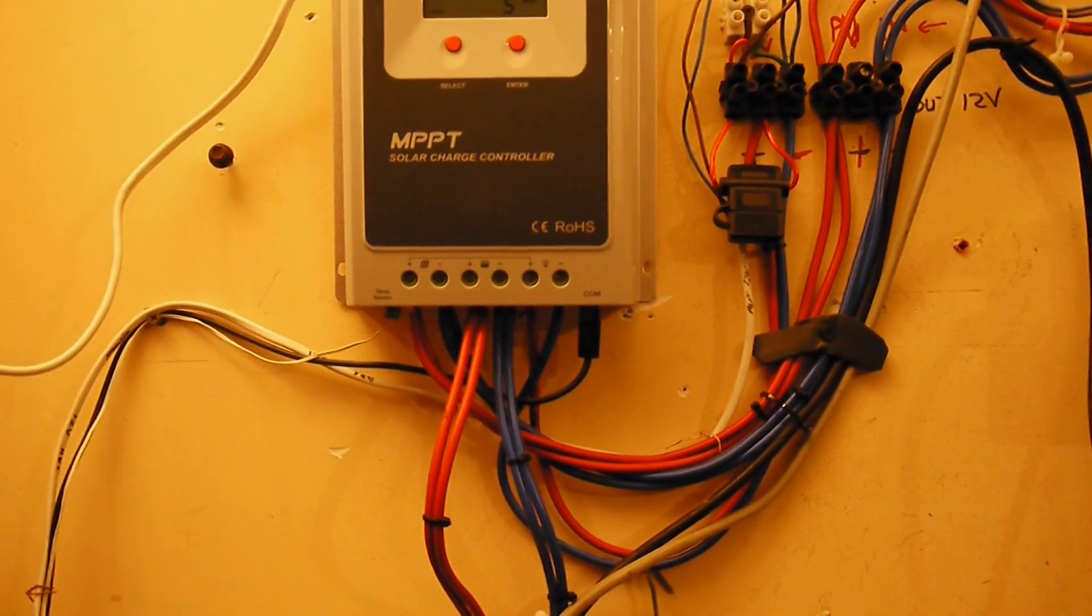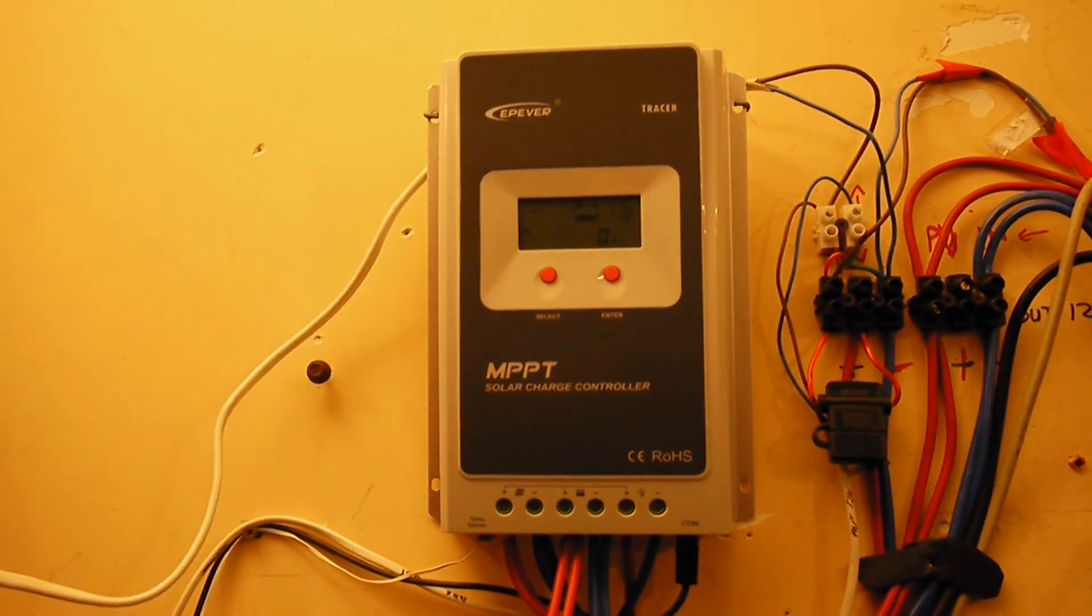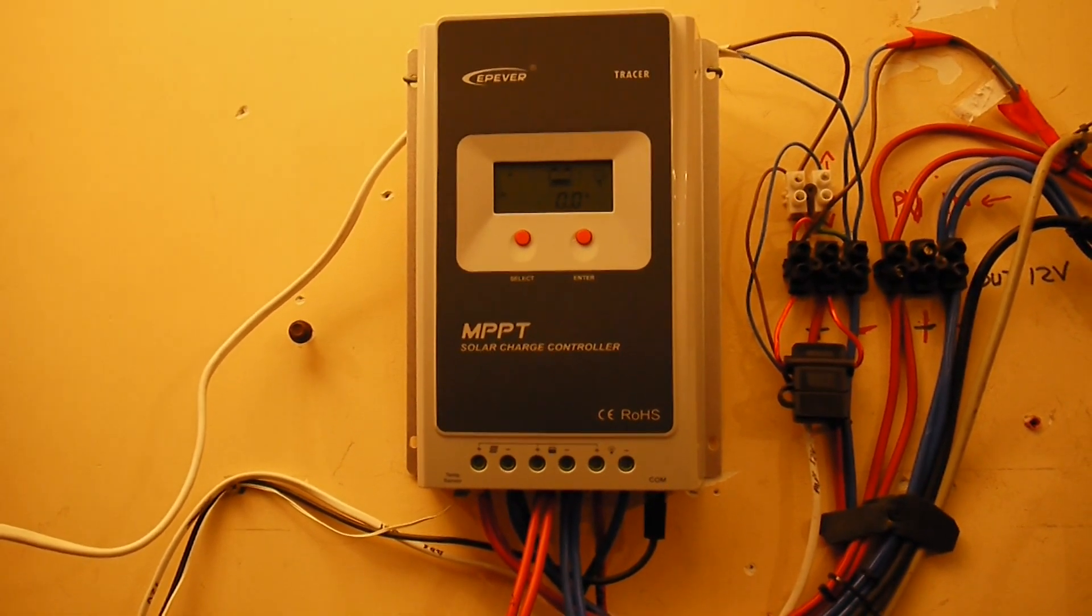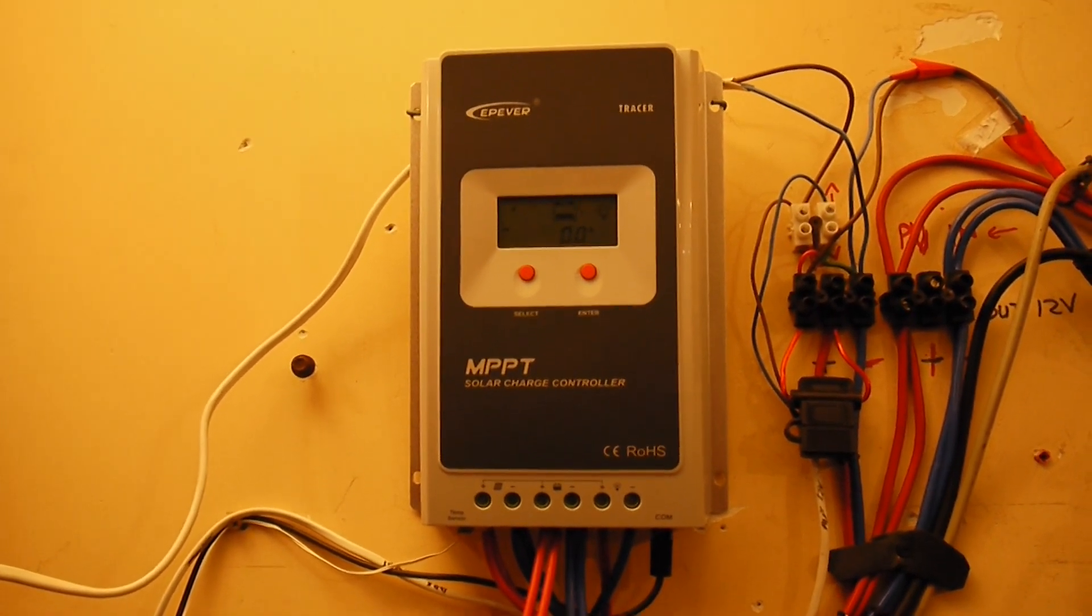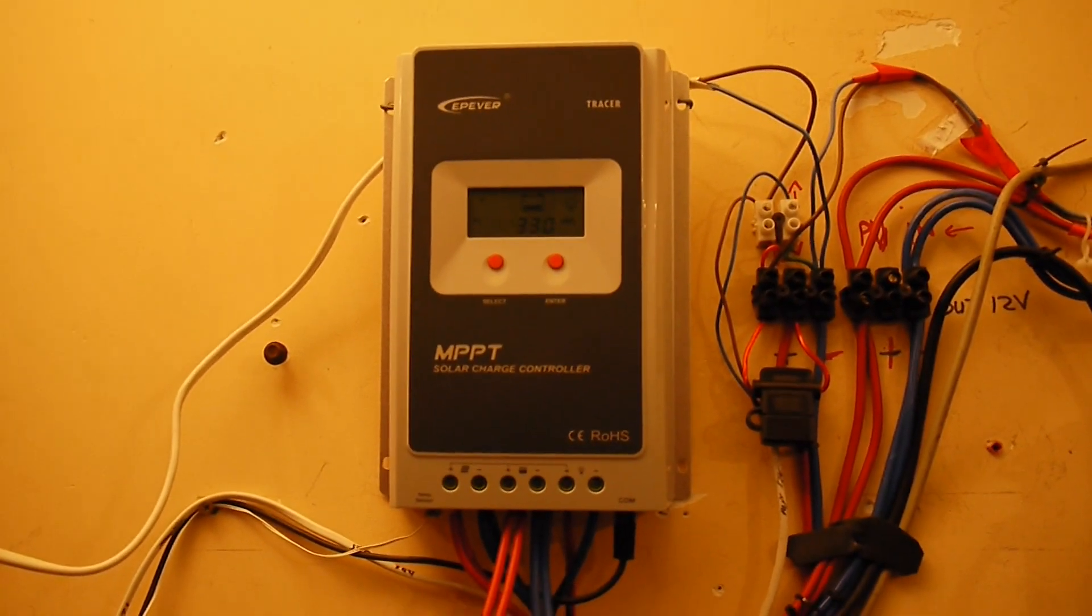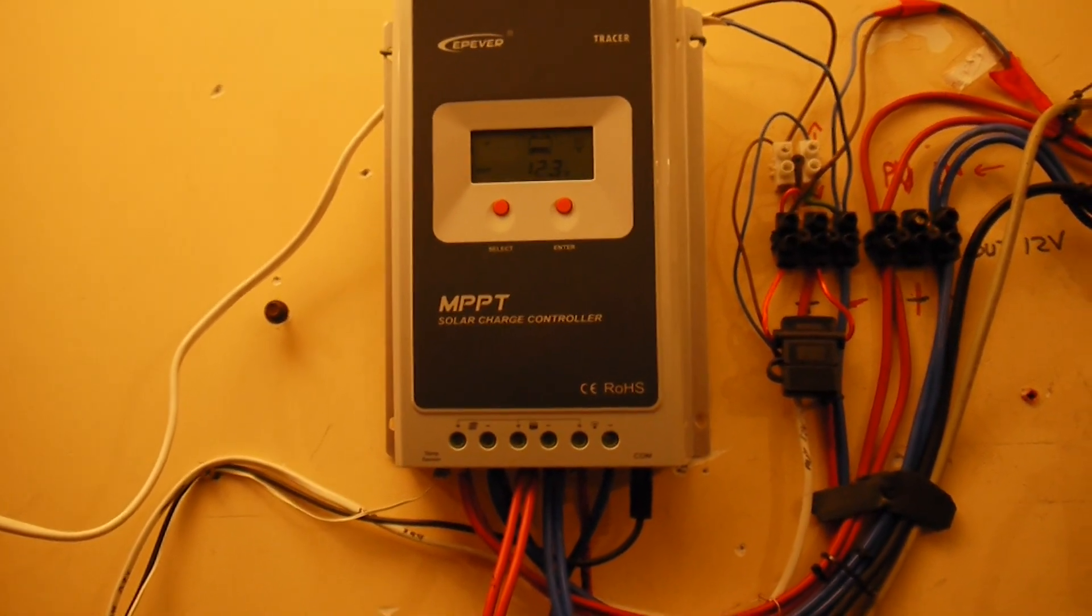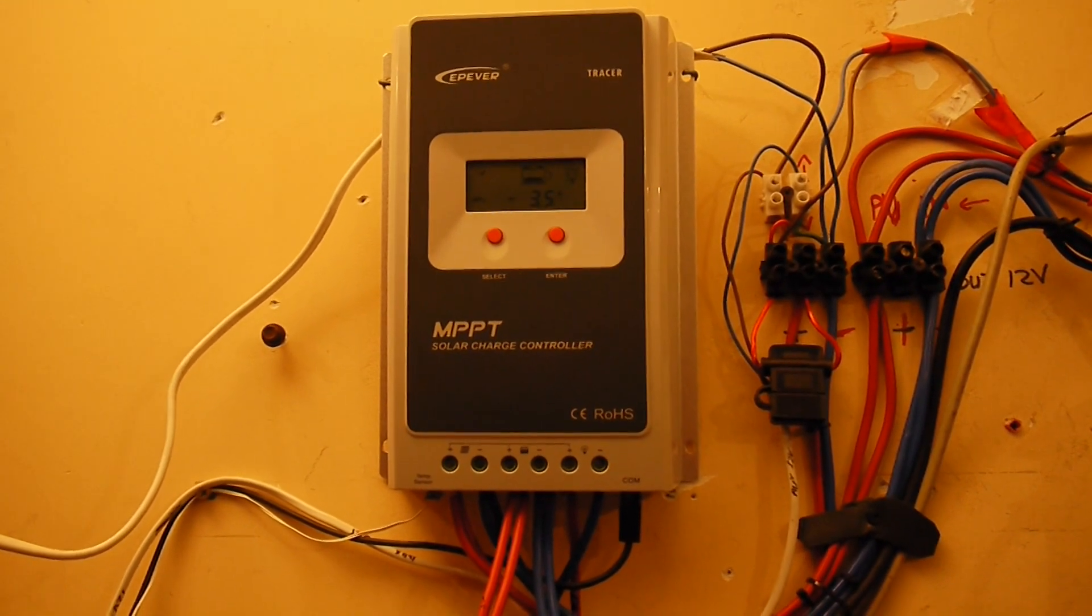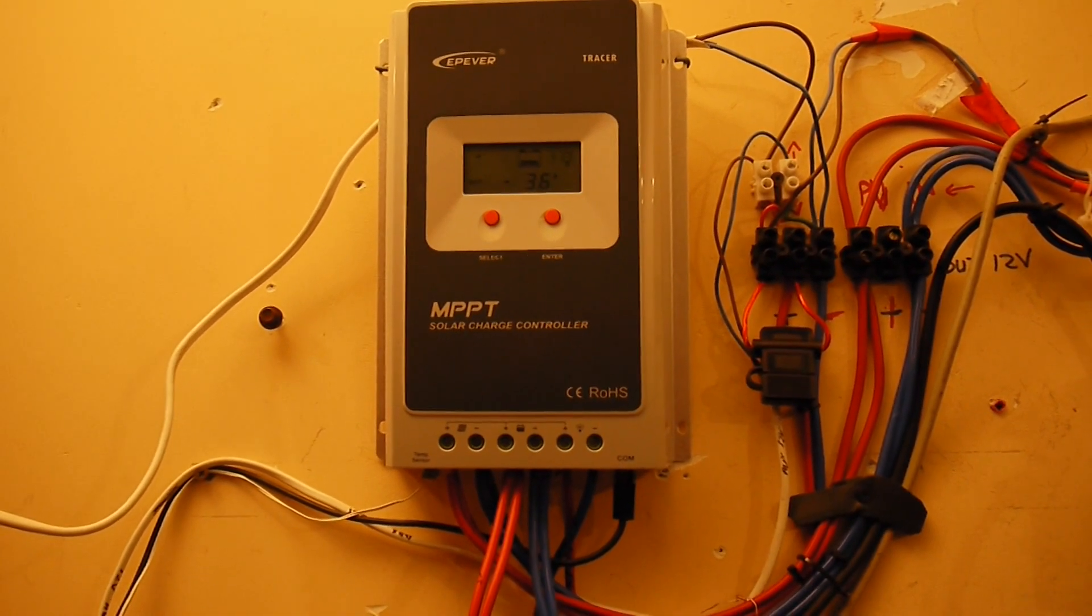Finally, I'm really satisfied about the EP Solar Tracer 4210a. It's a really great machine. I really recommend it. Be careful, of course, with all the polarities, plus and minus, and all these usual stops.